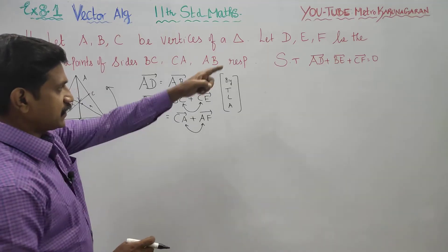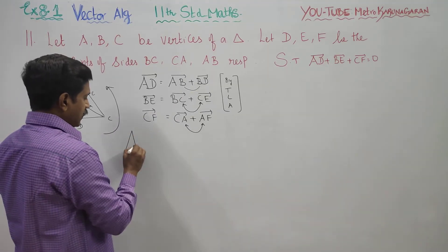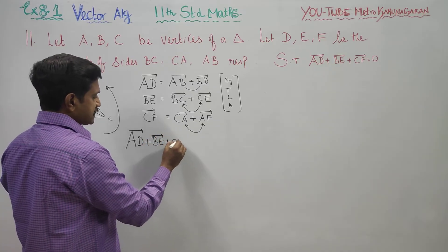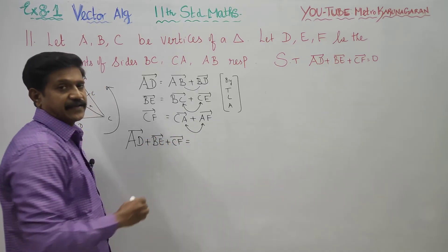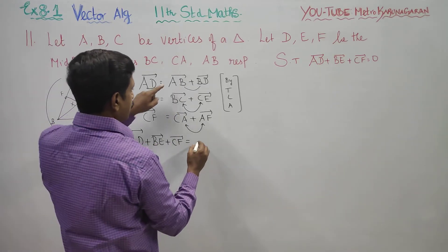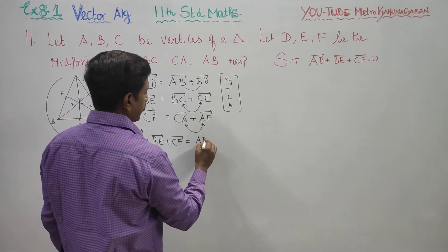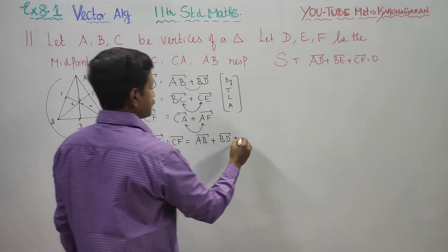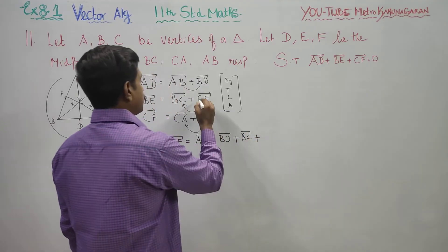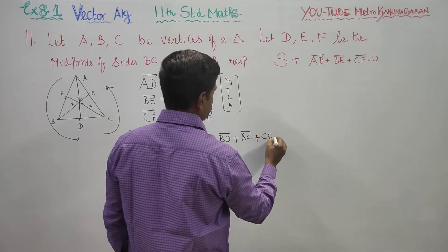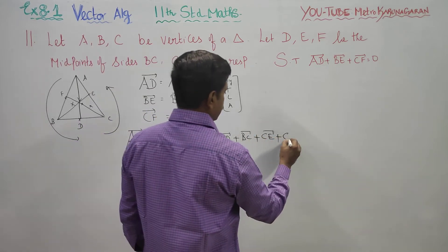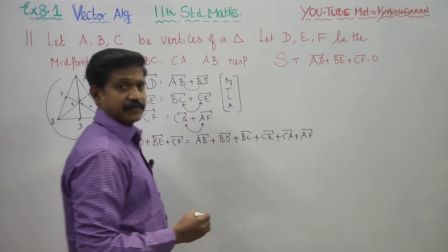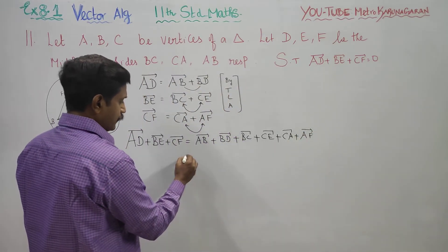Now I have to add everything: AD vector plus BE vector plus CF vector. Adding all three, we get AB plus BD, plus BC plus CE, plus CA plus AF.